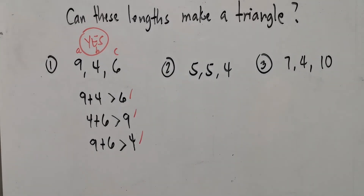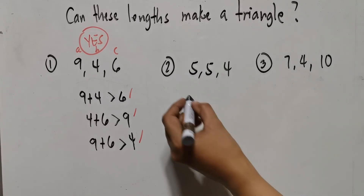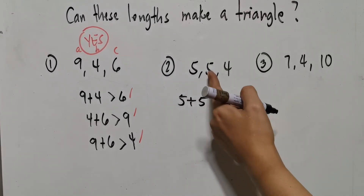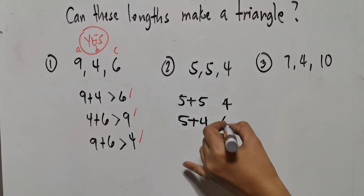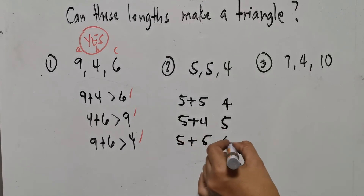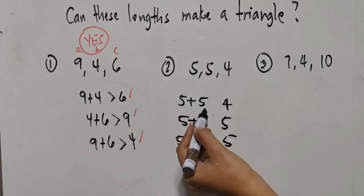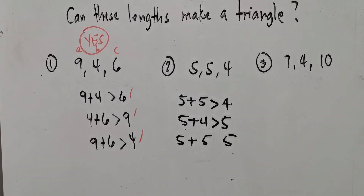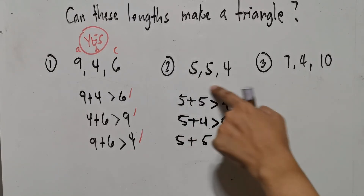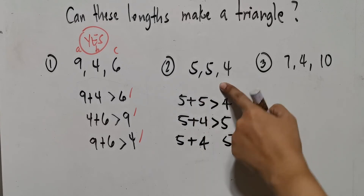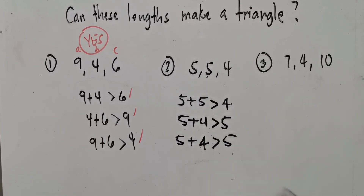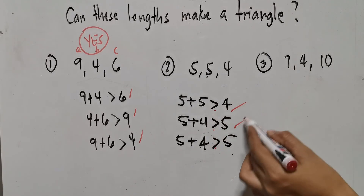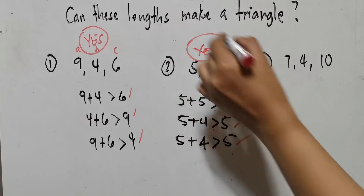For the second given, we have 5, 5, and 4. So: 5 plus 5 is 10 — greater than 4. Then 5 plus 4 is 9 — greater than 5. And 5 plus 4 is again 9 — also greater than 5. All are greater than, meaning these measurements can make a triangle.